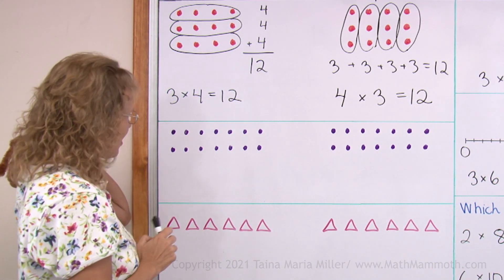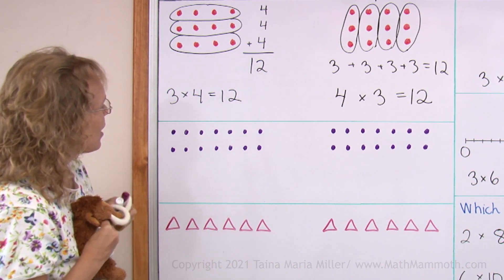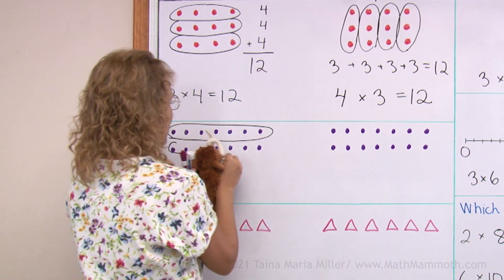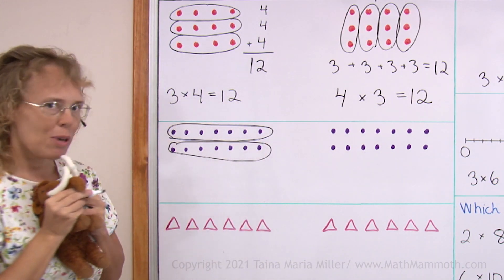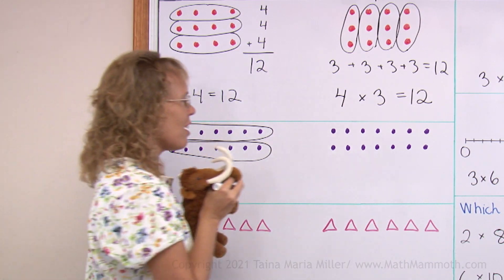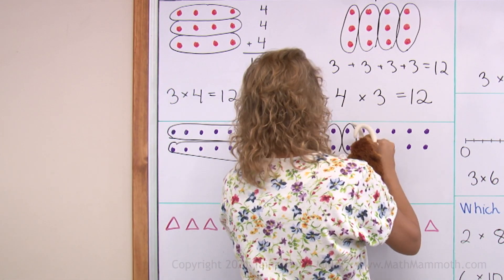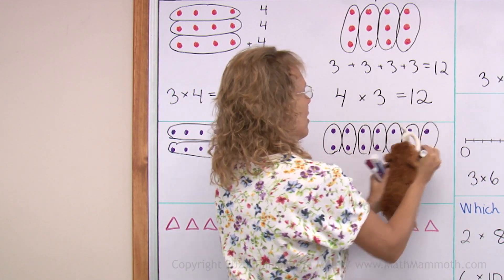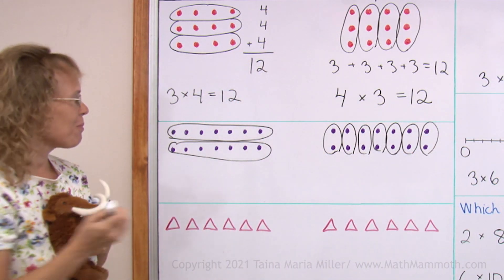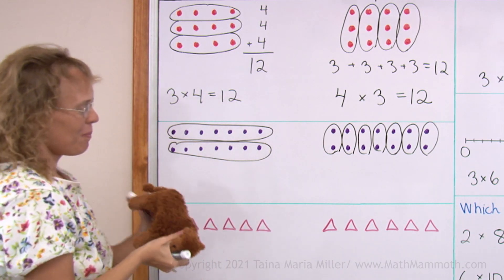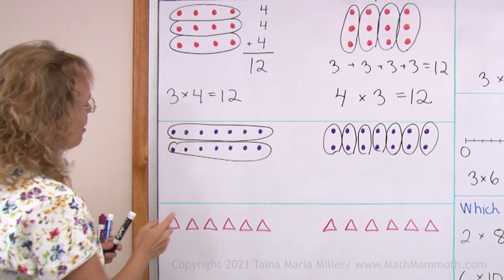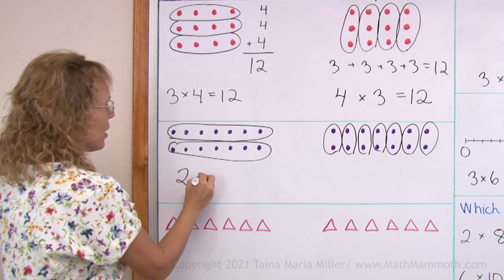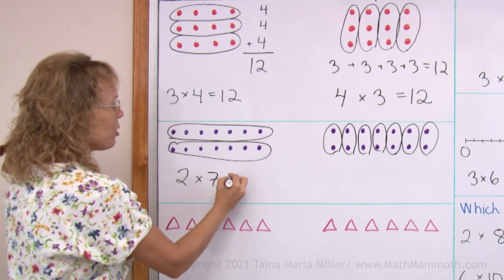Mati, you want to do that? Make the groups. That's one way to make the groups, and the other you can see this way — by the columns. By the rows, by the columns. And now we can write the multiplication. Here we have two groups and seven in each group.